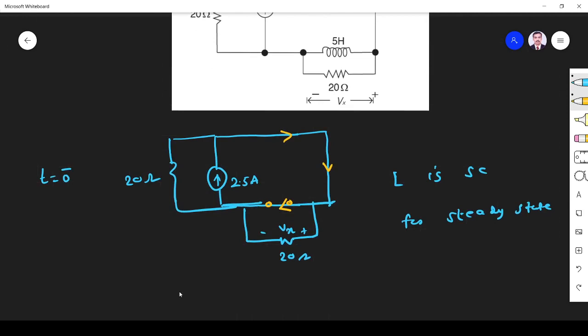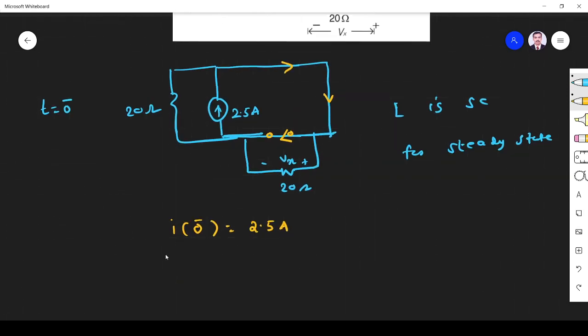So the current will go like this and all the current will go like this. So current through the inductor at 0 minus is 2.5 ampere. We know that inductor will not change current immediately. So this implies I(0-) equals I(0+). So it is 2.5 amps.